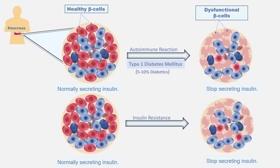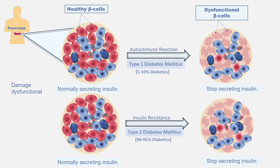The second major reason for damage of beta cells is insulin resistance. In this case, body cells stop responding to insulin, or have become resistant to insulin. Diabetes due to insulin resistance is termed Type 2 diabetes. Insulin resistance leading to Type 2 diabetes is the main cause of diabetes and constitutes 90 to 95 percent of all diabetics. In this video, I will discuss how insulin resistance — the major cause of diabetes — damages beta cells in the long term.